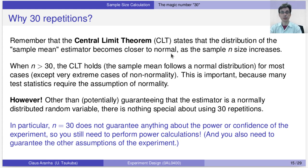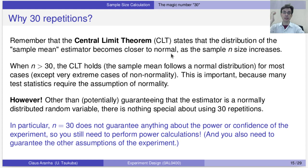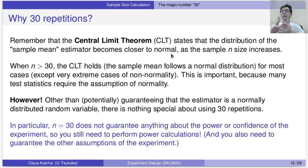This is an important result because many test statistics require the assumption of normality. So if you use 30, you are guaranteed for most cases to have a sample that kind of follows normal. However, the assumption of normality is just one of the many things you have to take into consideration in your experiment. It's important, but it's not everything. In the last video, we talked about the power of the experiment, the confidence of the experiment, and the cost of the experiment.